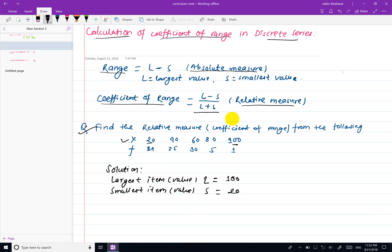Coefficient of range equals L minus S by L plus S. So 100 minus 20 divided by 100 plus 20. This equals 80 divided by 120, which equals 0.667.